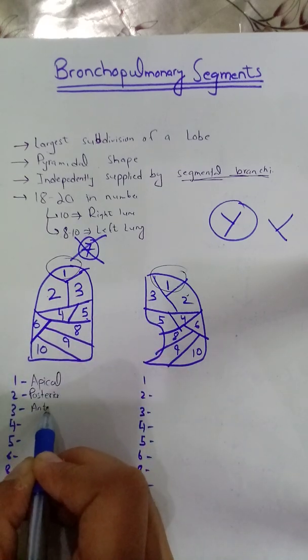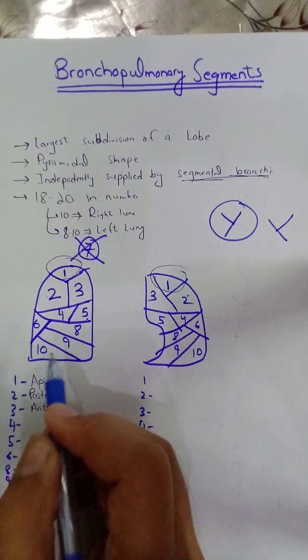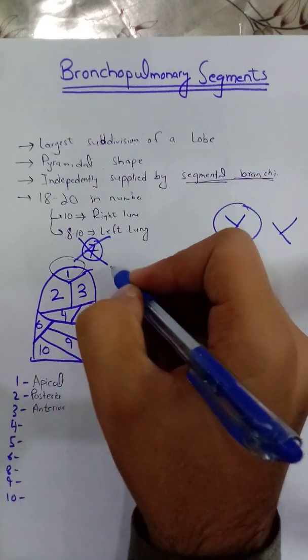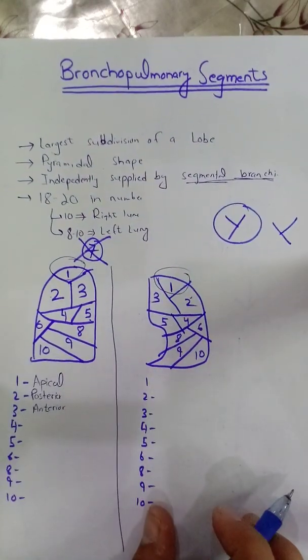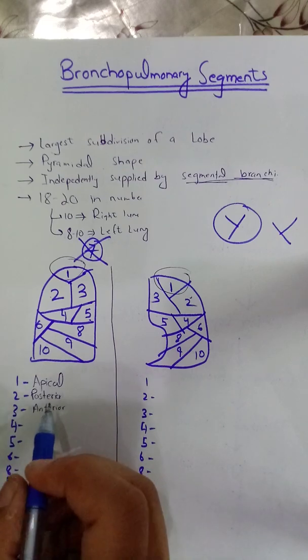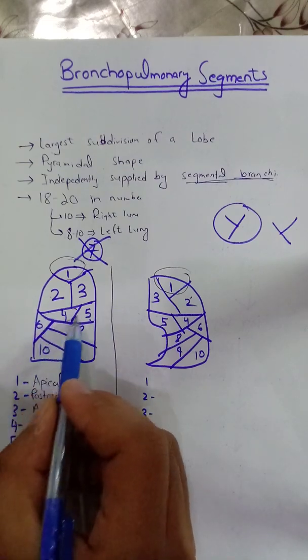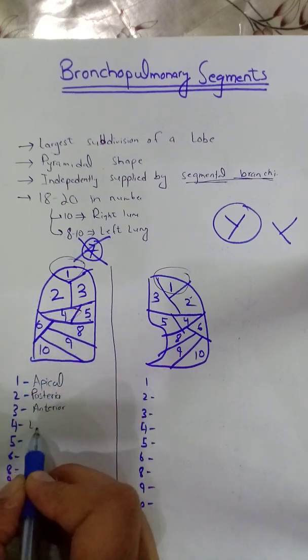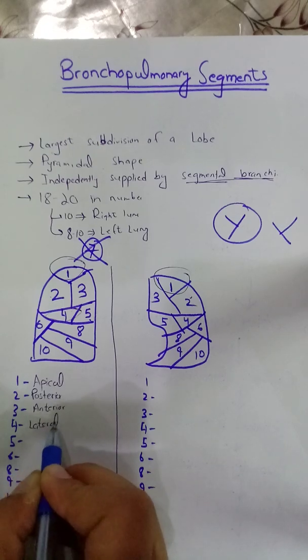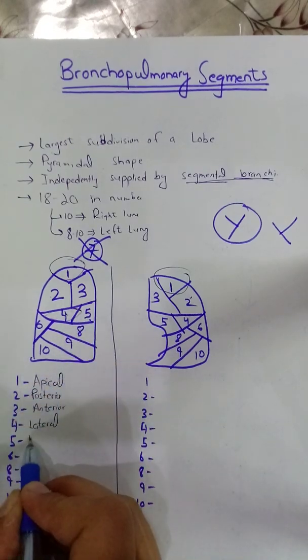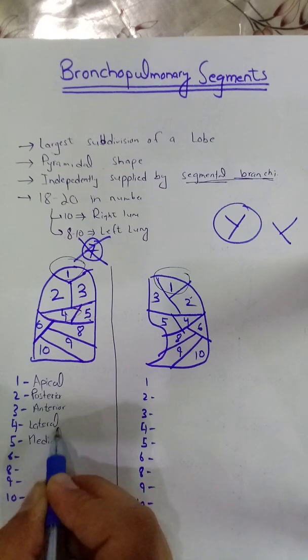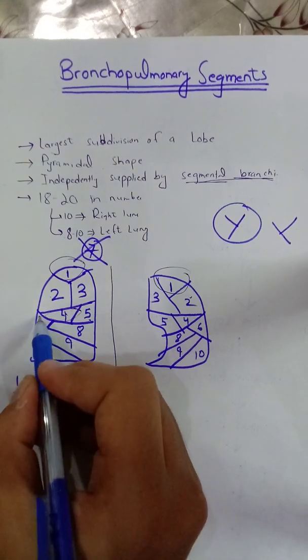This we are discussing for the right lung, and these will be of the left lung. Number 4, as it's on the lateral side, it will be lateral, and 5 will be on its opposite, so it will be medial. Six will be superior.